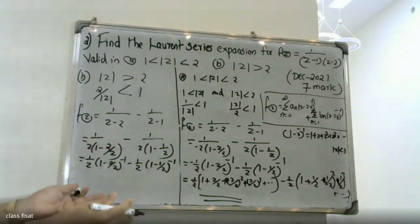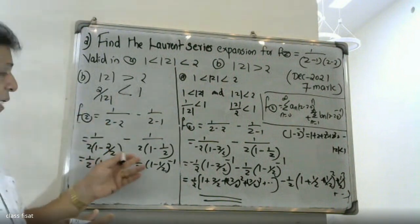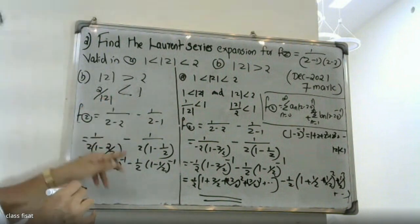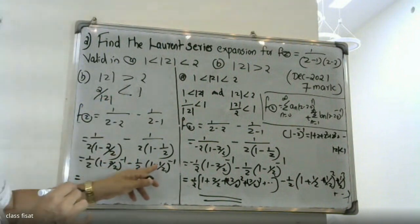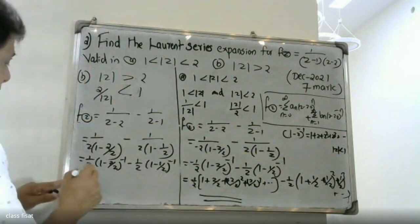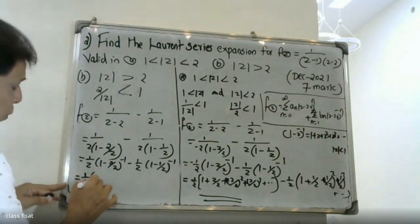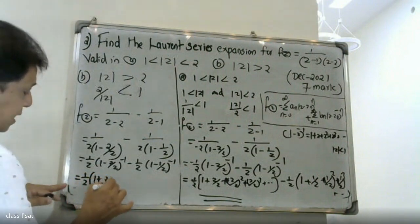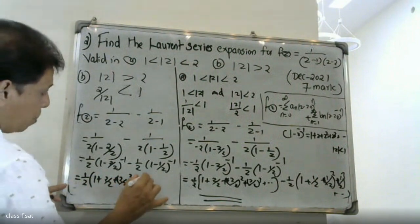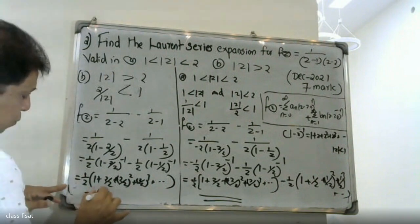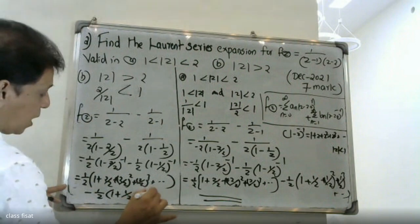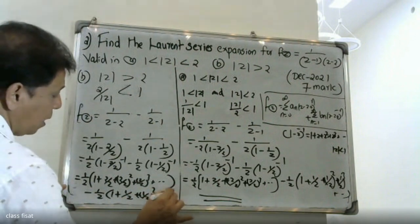We expand each term. Since 2 by |z| less than 1, we expand: 1 by z into (1 plus 2 by z plus 2 by z whole square plus 2 by z whole cube plus etcetera), minus 1 by z into (1 plus 1 by z whole square plus 1 by z whole cube plus etcetera). This is the Laurent series expansion for the region |z| greater than 2.